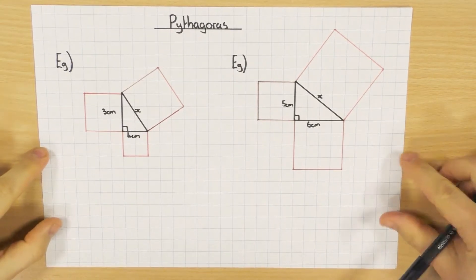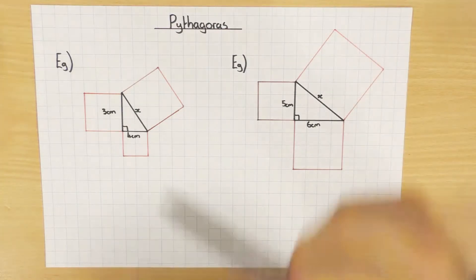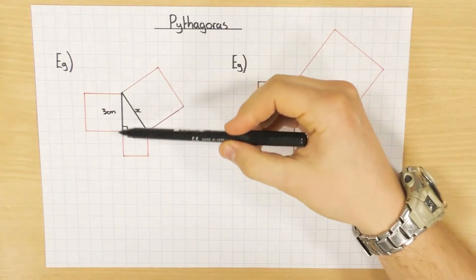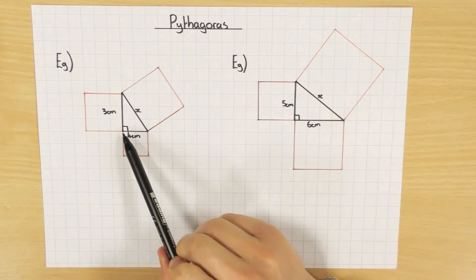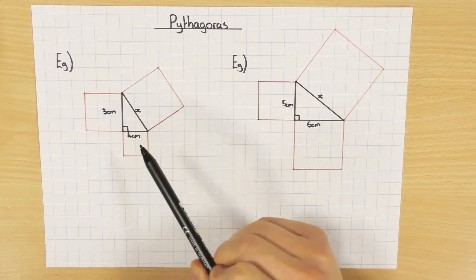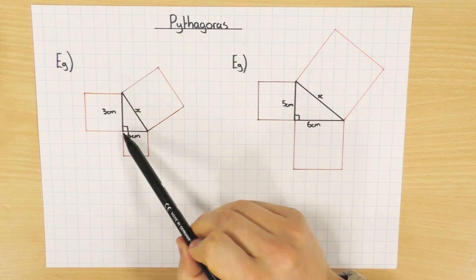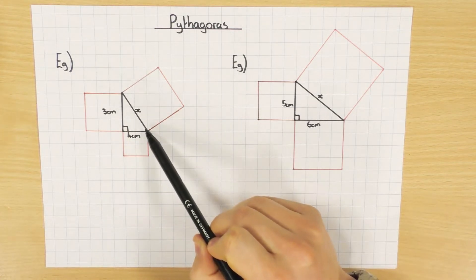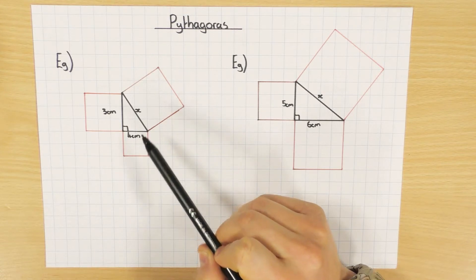In this video we're going to have a look at how we do Pythagoras. Pythagoras is used when you have a right-angled triangle — you can tell they're right-angled because they have this little square, indicating a 90-degree angle. It's a way that we can find a missing length. In this triangle here I want to find this length, and I'm going to show you two different ways you can do this.